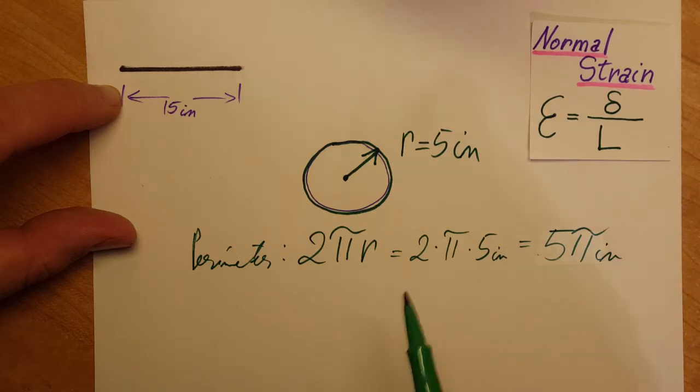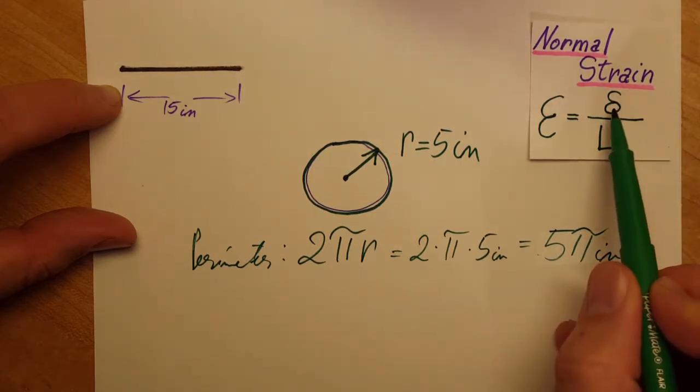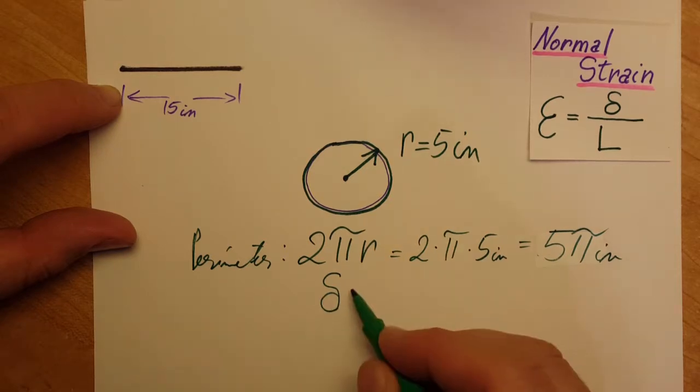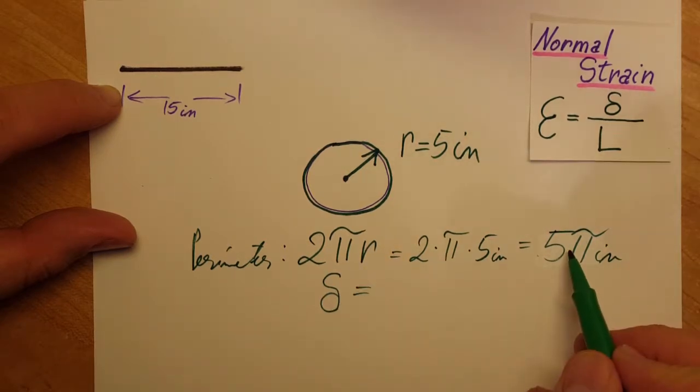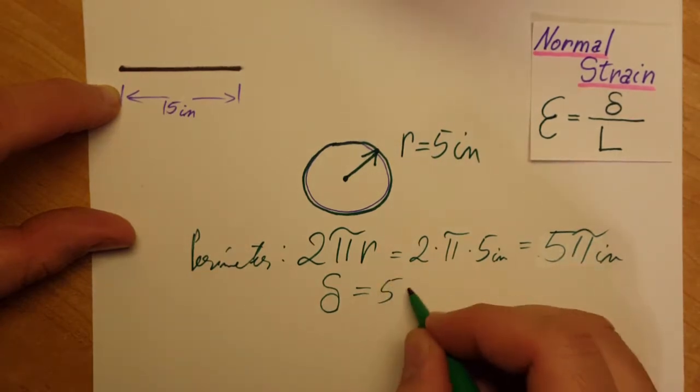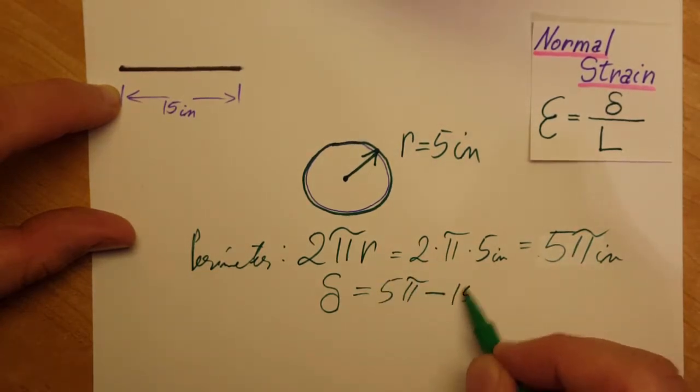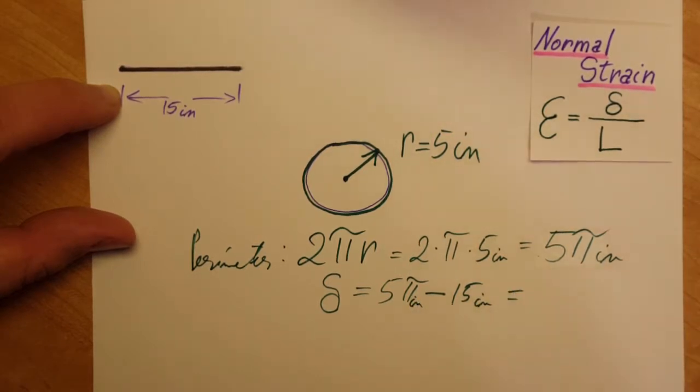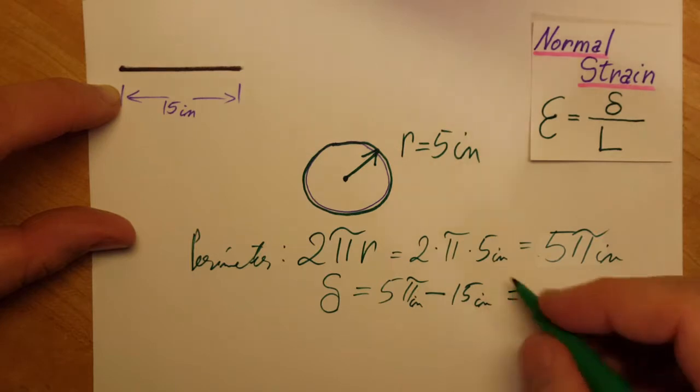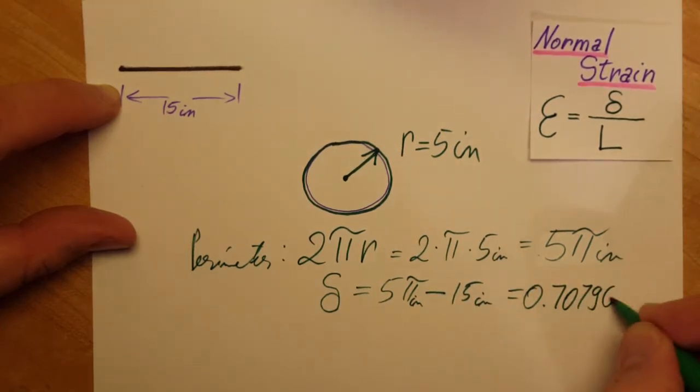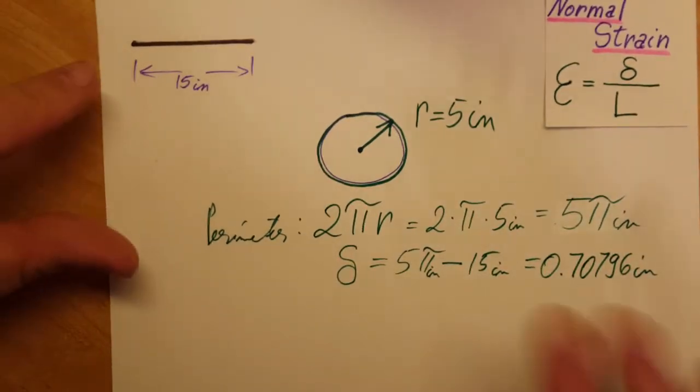Now we are interested in our change, so our delta is the difference: 5 pi minus 15 inches. With a calculator, we can find a value of 0.70796 inches. I'm not gonna round at this stage, I'm just gonna leave it like that.